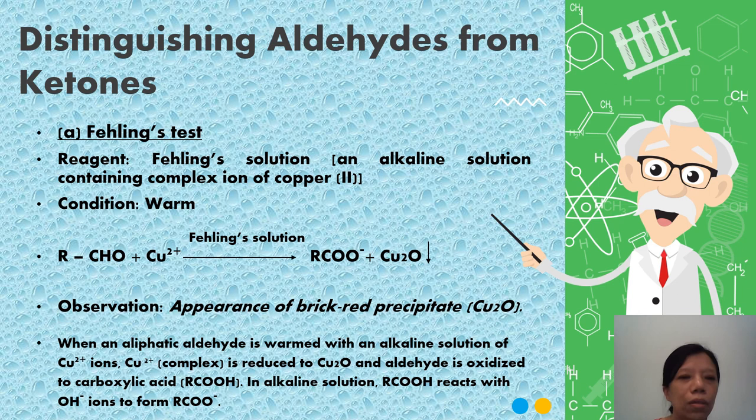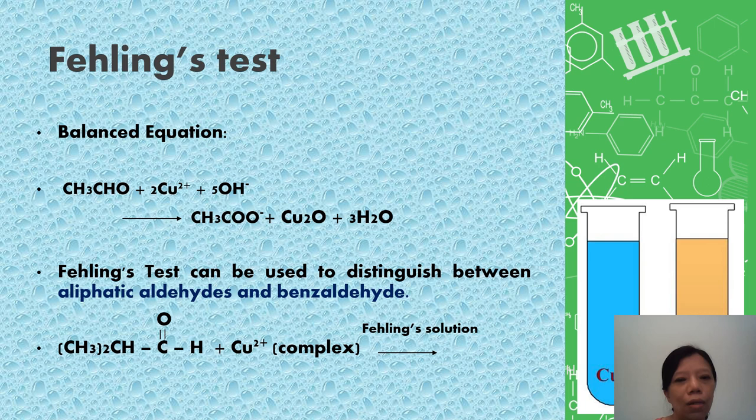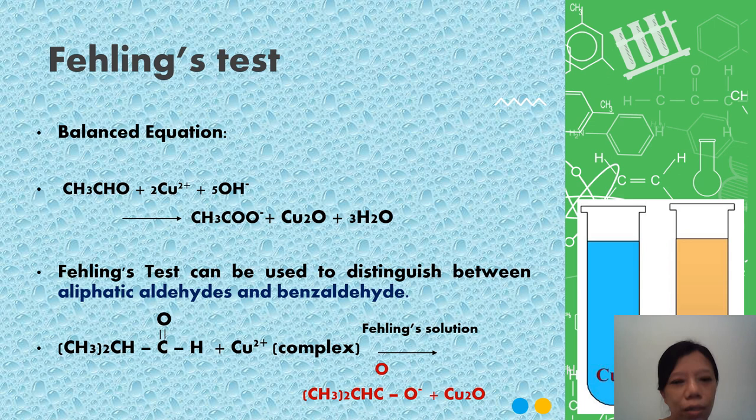Second test is Fehling's test. Fehling's test, the reagent is Fehling's reagent or Fehling's solution, which contains copper 2 ions in alkaline condition, also warm. The copper 2 ion will undergo reduction to form copper 1 oxide, which is a brick red precipitate. Only aliphatic aldehydes will undergo this reaction; benzaldehyde cannot. The same as before, carboxylic acid is formed first. If the equation asks for a balanced equation, you write this one. We use Fehling's test to differentiate aliphatic aldehydes and benzaldehyde.